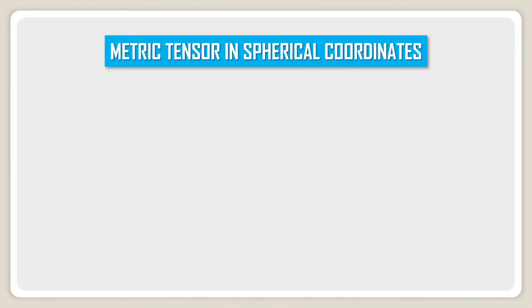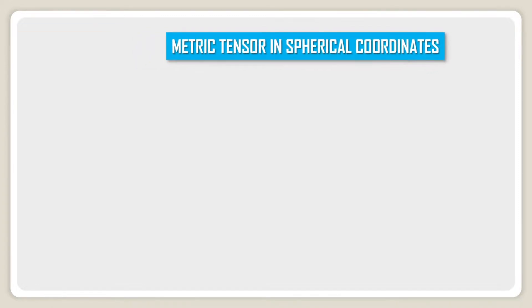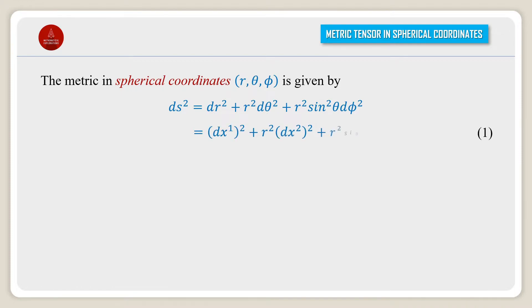Metric tensor in spherical coordinates. The metric in spherical coordinates (r, θ, φ) is given by ds² = dr² + r²dθ² + r²sin²θ dφ², which can be written as (dx¹)² + r²(dx²)² + r²sin²θ(dx³)².